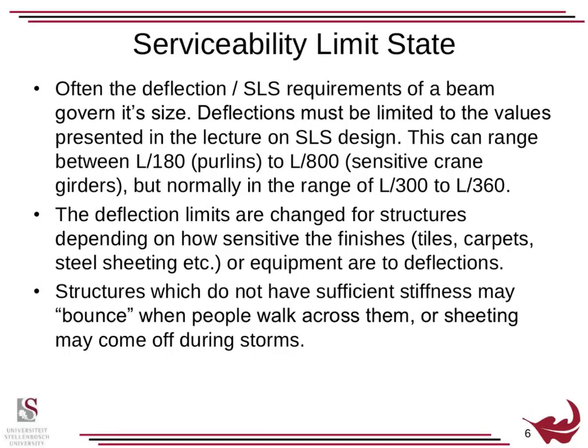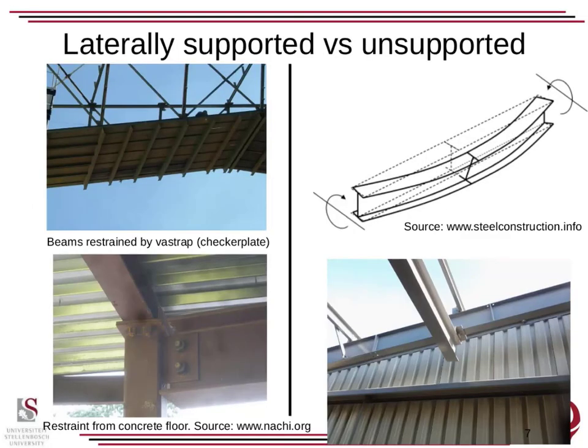Serviceability often sizes the beams. The size of beams is actually determined by serviceability, so you do need to check this. We don't make a big fuss of it in the course because it's quite a simple check, but often it governs your beam size. They range from L over 180 for purlins to L over 800 for sensitive crane girders. Depending on your finishes, the limit will change. And also, if you don't have enough stiffness, you'll find your structure bounces. You'll find this on, well, there used to be a bridge between the structures and construction management wing in the civil engineering department, and that has a bit of a bounce on it.